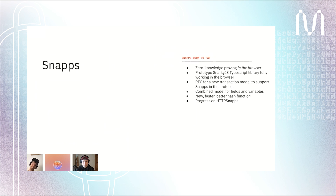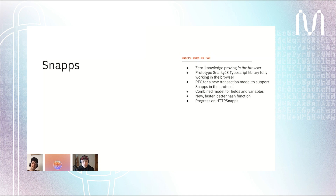On the snaps side, this is just a glimpse into what's already been completed. We have zero knowledge proving that works fully in the browser — you can prove snarks in the browser. Not only can you prove them, but you can implement snark circuits using TypeScript or JavaScript in the browser and then prove them. There's an RFC out for the new transaction model needed to support snaps in the protocol. There's also a better hash function, and there's a ton of progress on HTTPS snaps. This is a concept where websites with public data behind an HTTPS certificate can get that data on chain on MENA without the website really even having to integrate MENA.